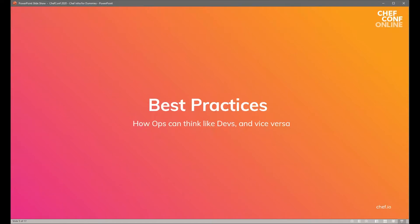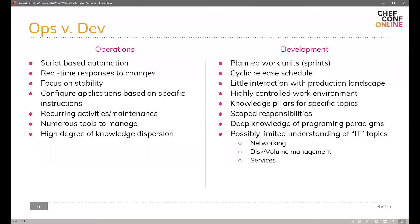So, best practices. The first part of that is: how do we get ops to think like devs and devs to think like ops? Obviously we're not going for some huge utopia where everybody knows what everybody else does. But we need to build this basis of understanding, and we do that by identifying some key areas and key differences in the way these two different departments tend to work.